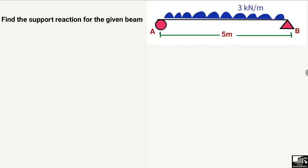We are interested to find out the support reactions for the given beam. The beam has a length of 5 meters and it is a simply supported beam. Here is a roller support and here is a hinge support, and there is a uniformly distributed load of 3 kilonewton per meter acting on this beam.